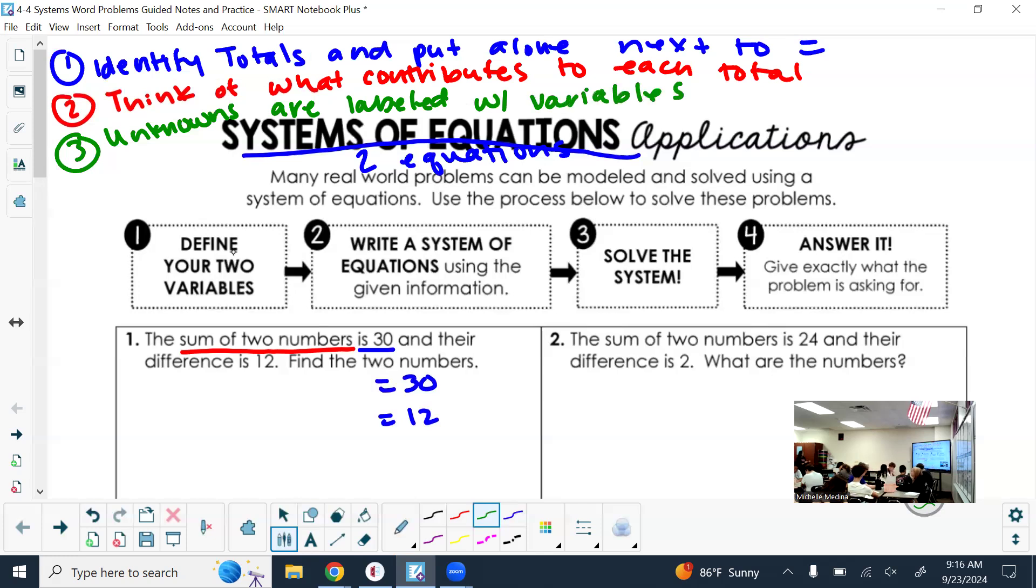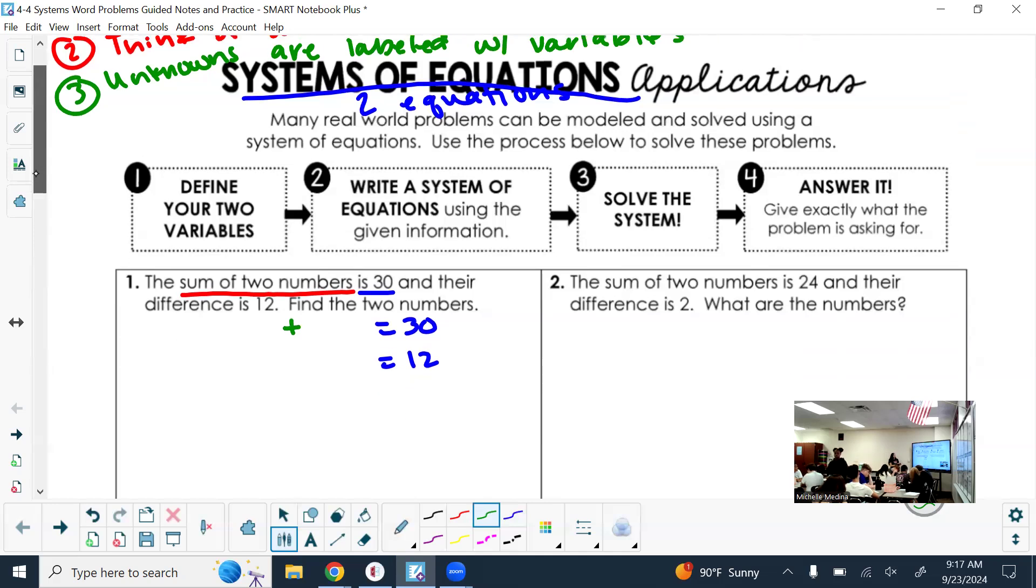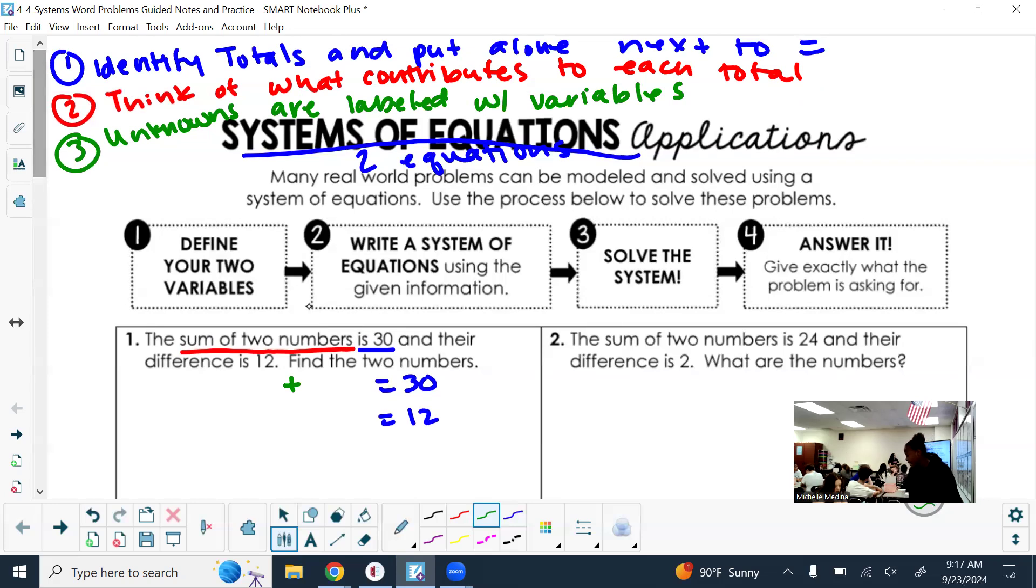Table seven, how can I write the sum of two numbers on the other side of the equal sign? Do I know what the two numbers are? Am I allowed to just pick two random numbers? How do we label unknowns in math? Unknowns are labeled with variables. You can probably continue with the rest of it: define your variables, write the system, solve it, answer it. This is how to make your system. Identify your totals, think of what contributes to that total. If you don't know something, it's probably a variable.